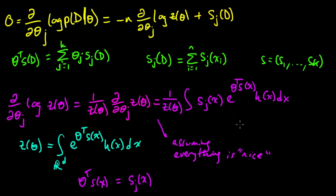And now we move z of theta inside here, and divided by z of theta is just our original distribution. So this equals sj of x times p sub theta of x dx, and that equals the expected value of s sub j of x, of the random variable x that is distributed according to this probability distribution. So it's the expected value of the jth coordinate. And maybe I should put theta here to emphasize that this is when x is distributed according to theta.